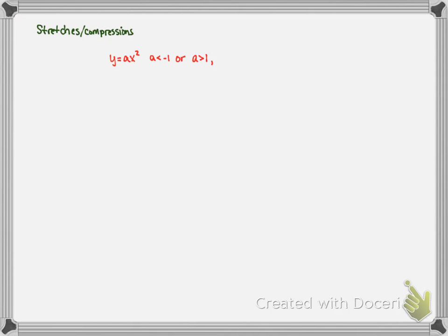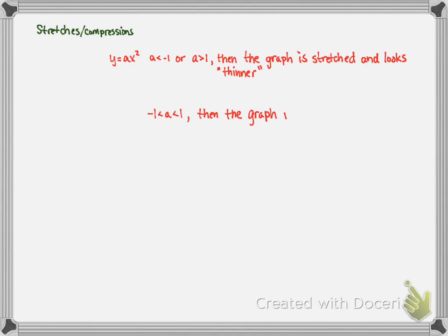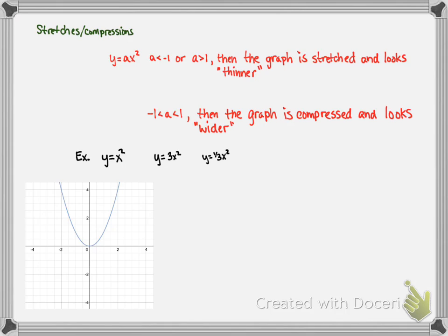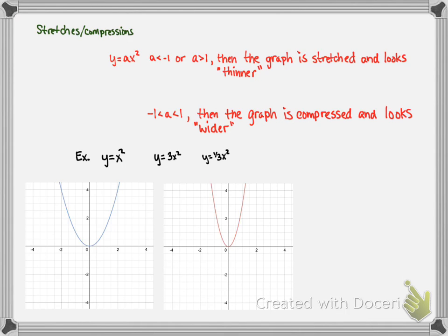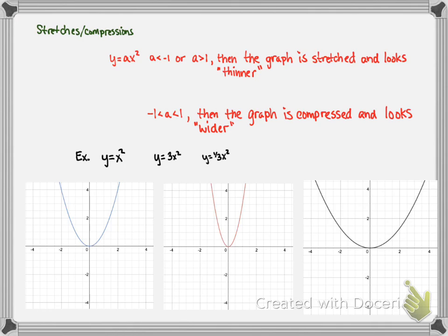Stretches and compressions: y equals ax squared. If a is less than negative 1 or greater than 1, then the graph is stretched and looks thinner. If a is between negative 1 and 1, then the graph is compressed and looks wider. For example, y equals x squared, y equals 3x squared, y equals one-third x squared. The parent function y equals x squared is in blue, y equals 3x squared is in red, y equals one-third x squared is in black. y equals 3x squared looks thinner because it's stretched vertically, and y equals one-third x squared looks wider because it's compressed vertically.